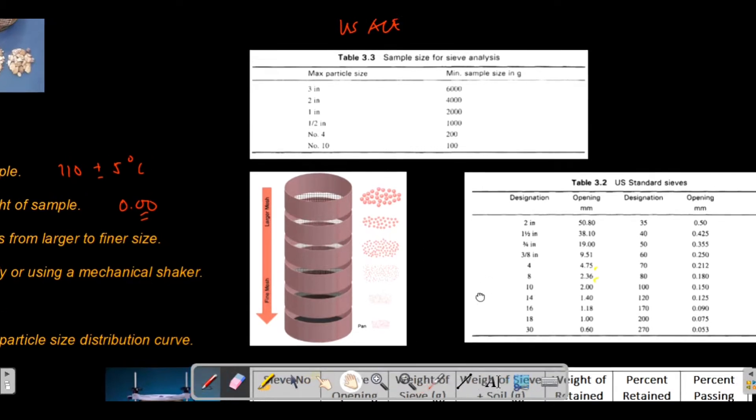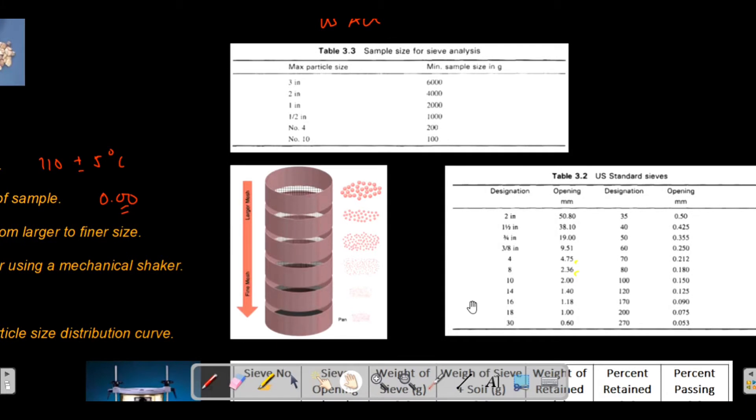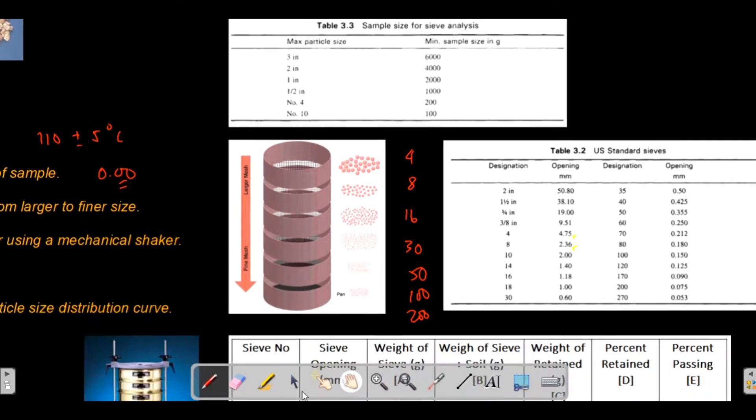The recommended arrangement is the upper sieve should have one order larger diameter than the lower sieve. For example, if your soil sample is dominantly gravel, you have number four, then you can have an arrangement like number four, then eight, then sixteen, thirty, fifty, one hundred, two hundred. And lastly, we have the pan. The pan is where your fines accumulate.